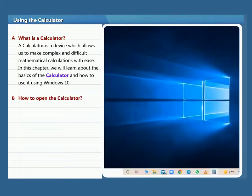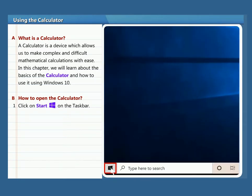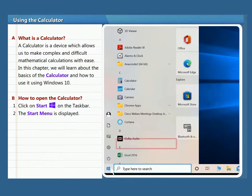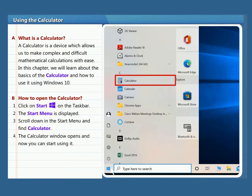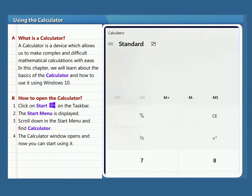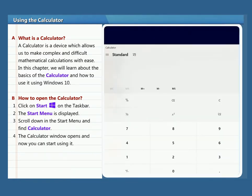How to open the Calculator? 1. Click on Start on the taskbar. 2. The start menu is displayed. 3. Scroll down in the start menu and find Calculator. 4. The calculator window opens and now you can start using it.